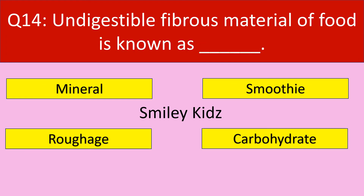Question number 14. Undigestible fibrous material of food is known as what? Options are: mineral, smoothie, roughage, and carbohydrate.